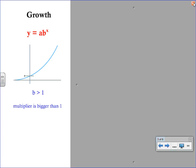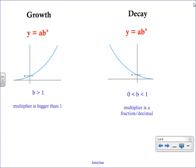The second graph is decay. We use the same exact equation. Only this time, our multiplier is a fraction or a decimal. That means that your b value is going to end up being between 0 and 1. In your notes, these graphs are provided. I would just like you to add these extra things in here so that you understand what is actually going to cause your graph to be growth or what is going to cause your graph to be decay.